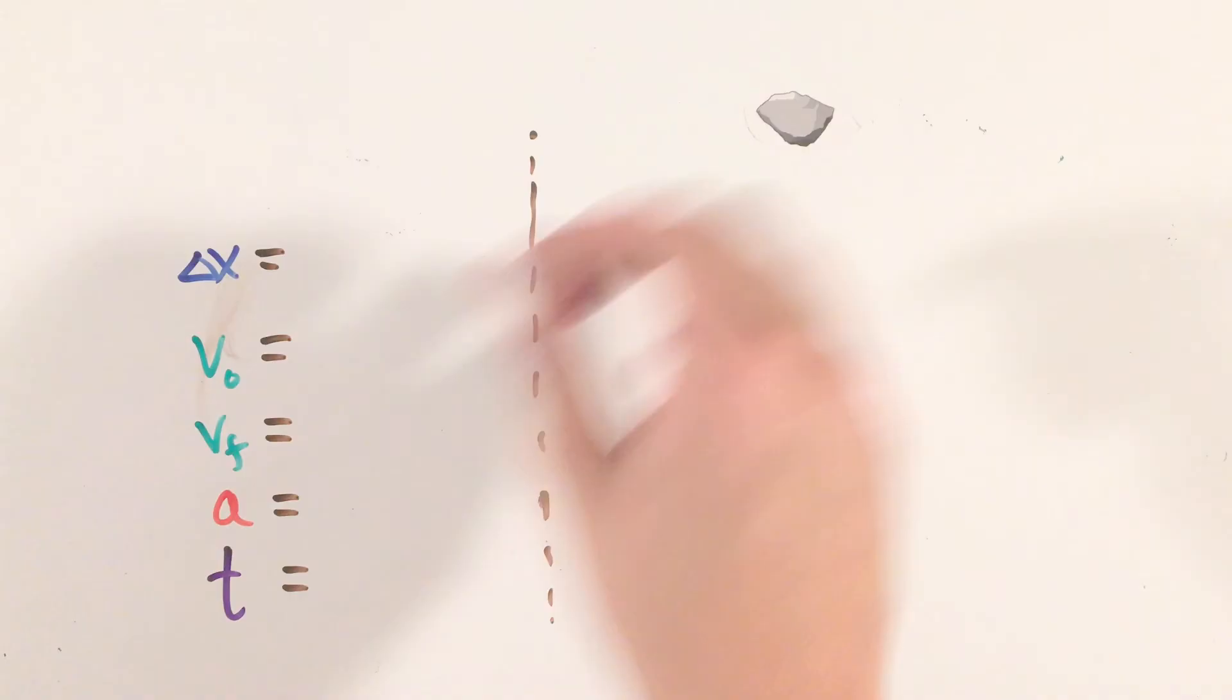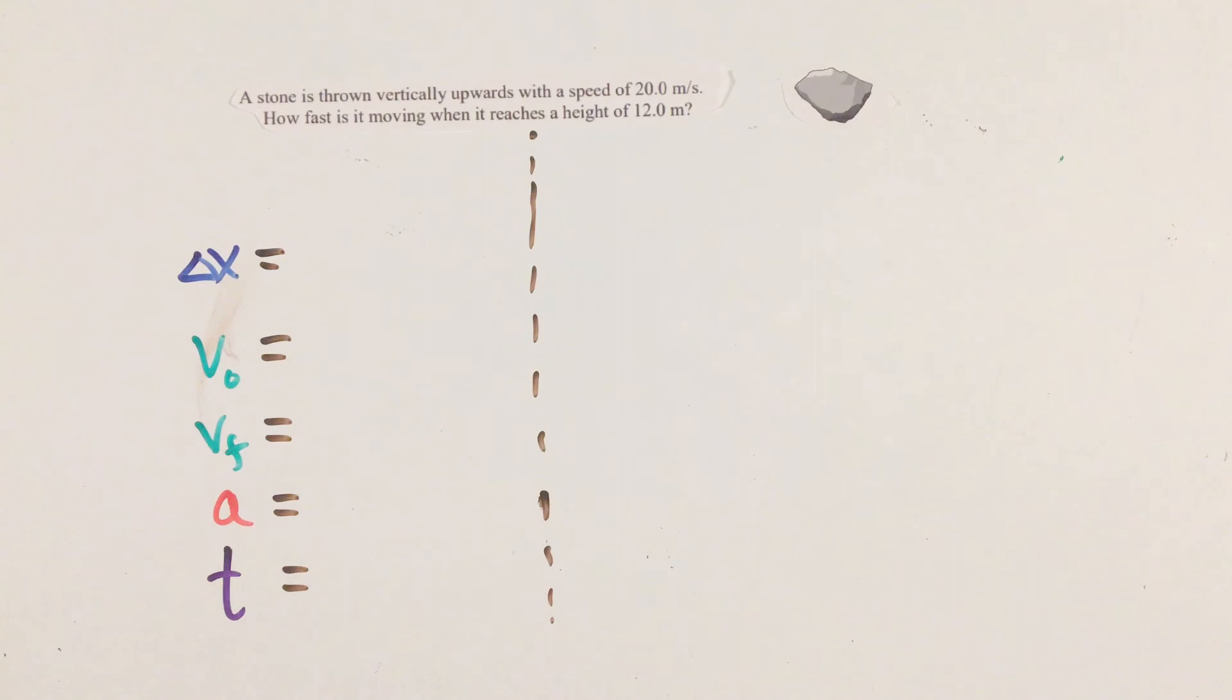Finally, this question about a stone being thrown up needs a couple of extra context clues. First, after writing out our given variables, it may seem that we don't have nearly enough information.